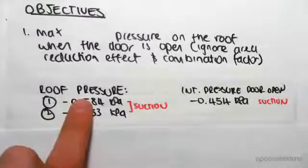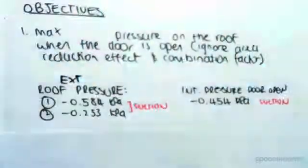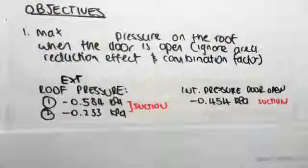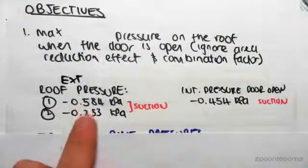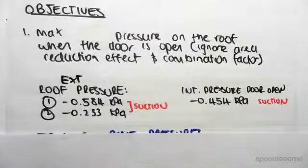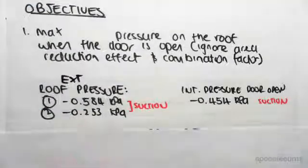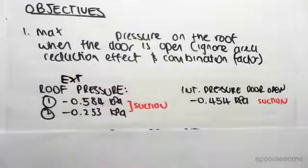We found the external roof pressures in previous videos. We had two separate cases: minus 0.54 kPa and minus 0.253 kPa. I've just rewritten those out there and those are both obviously suction because they're negative.